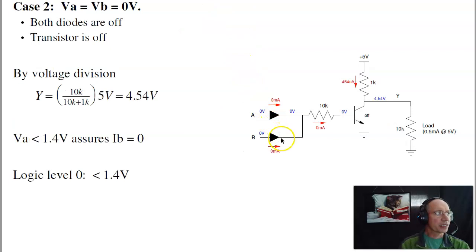The second case is when both A and B are 0. If both these are 0, I have no current flow, the transistor turns off, and I get 4.54 volts. And as long as there is no current flow in the base, I'm at logic level 0, which says that anything less than 1.4 volts counts as logic level 0.